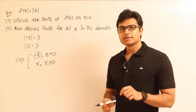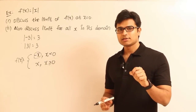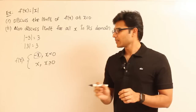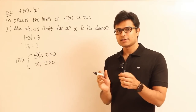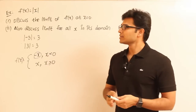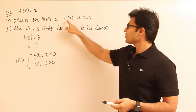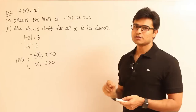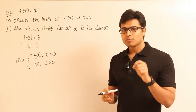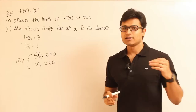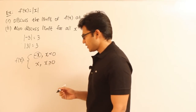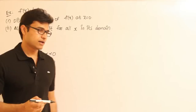If you observe this, mod x seems to change its behavior at the point x = 0. This function changes at point 0, and that is why we are asked to analyze it there. The question is: discuss the limit of f(x) at x = 0. The limit exists at a point whenever its left-hand limit and right-hand limit are both equal. Let's find out what the left-hand and right-hand limits are here.